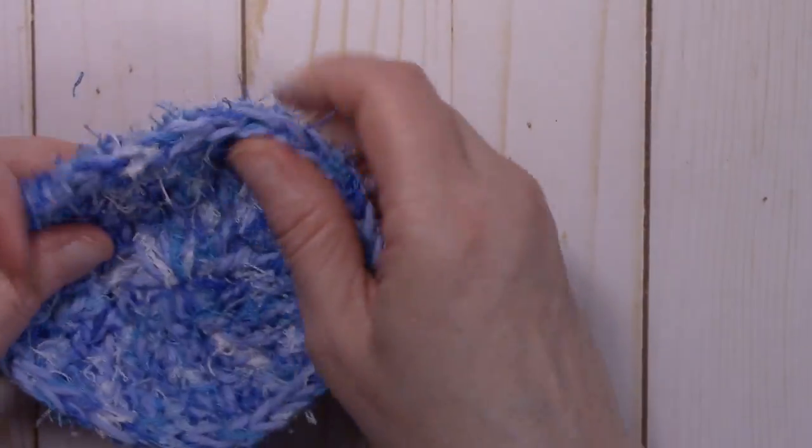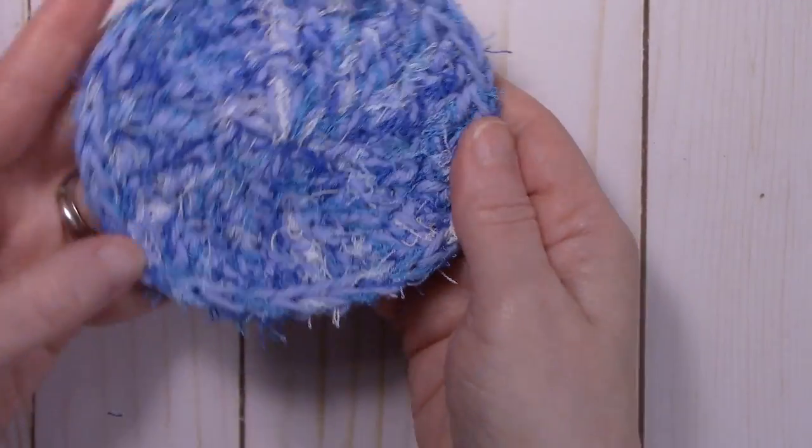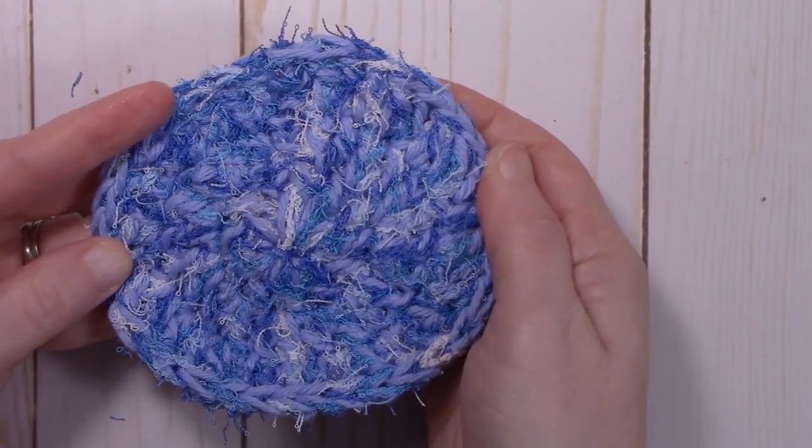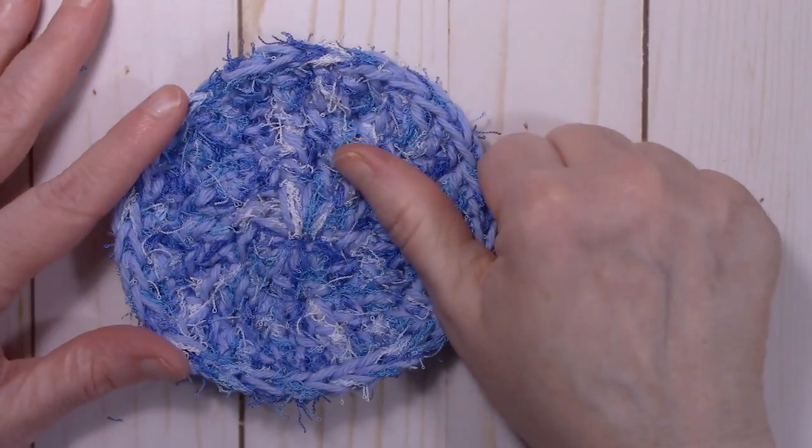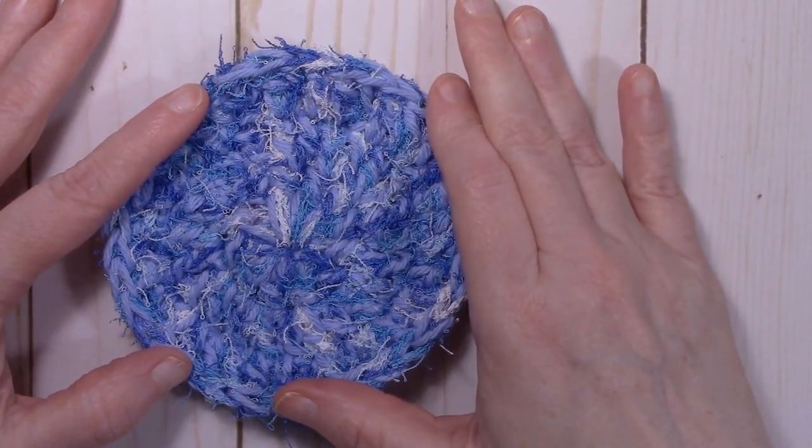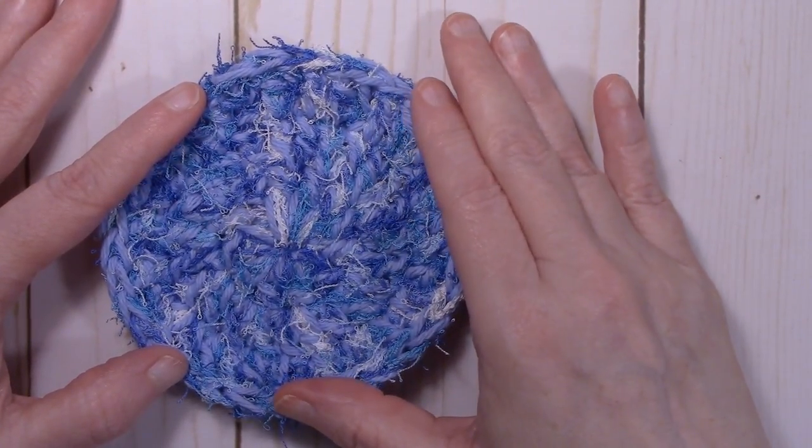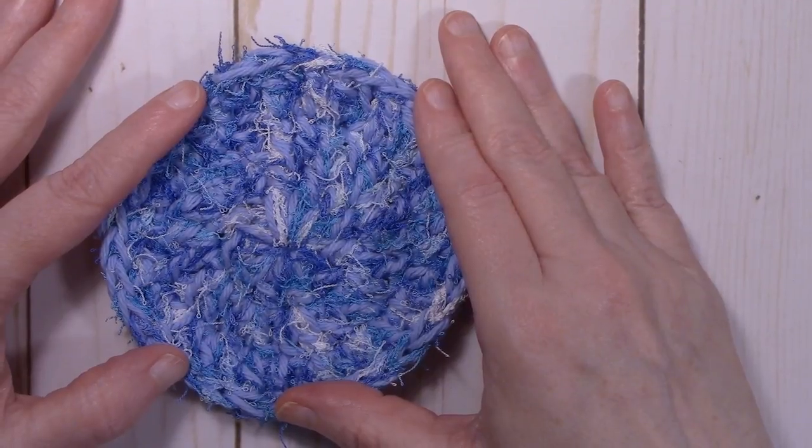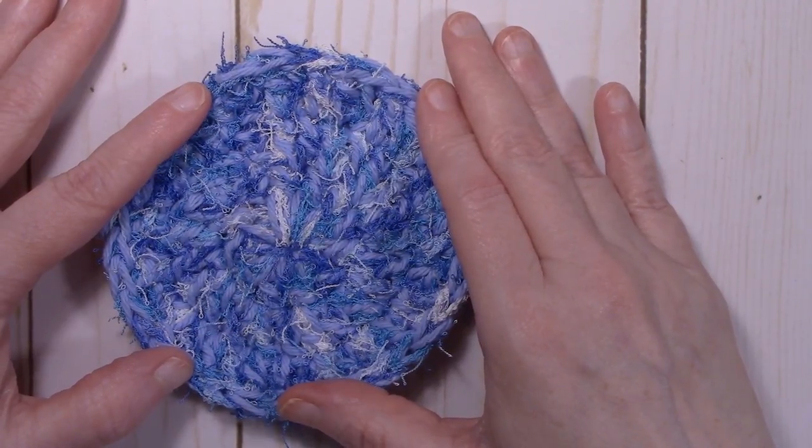And just snip those off. And you're all set. And there is your pot scrubby. So if you've liked this tutorial, please give it a thumbs up. And if you haven't done so already, go ahead and hit that subscribe button. And don't forget to ring that bell so you won't miss any of my tutorials. Thanks for watching, and happy crocheting! Bye-bye!